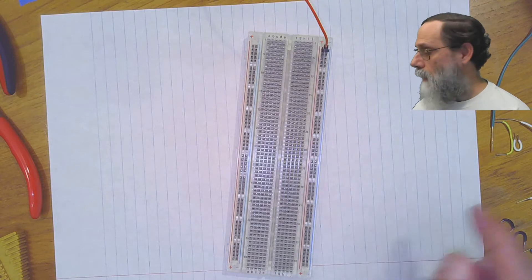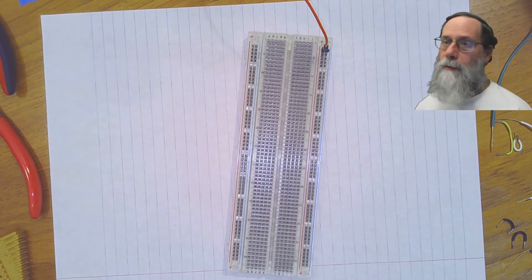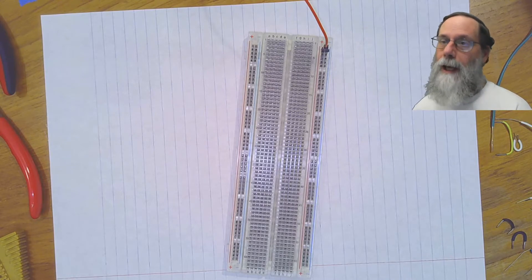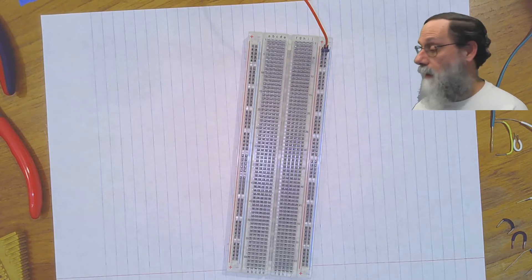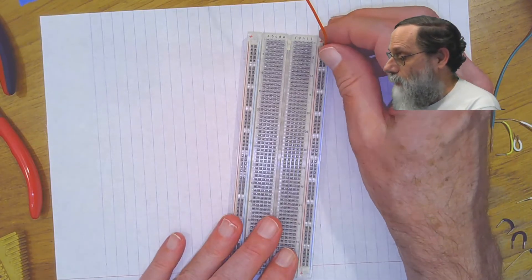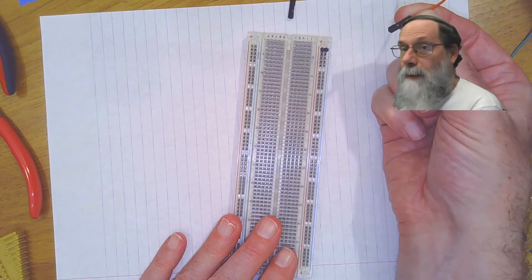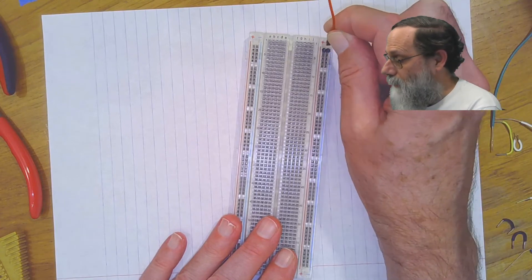You never want to stick a bare wire into one of those female headers, because if the bare wire breaks off, there's no way to get it out again, and basically that ruins the female header and one would have to cut it off and crimp on a new one, which is a lot of extra work. So the only thing that goes into these female headers is the male header pins.